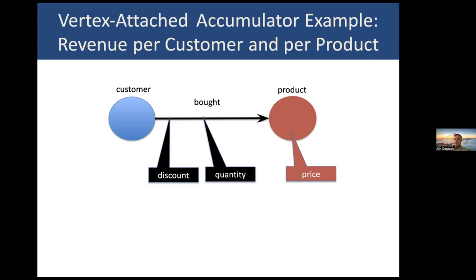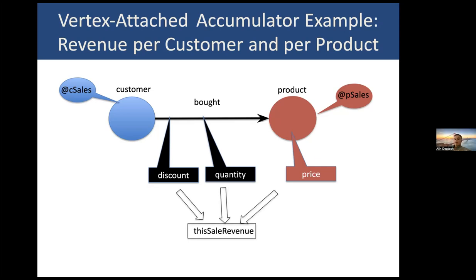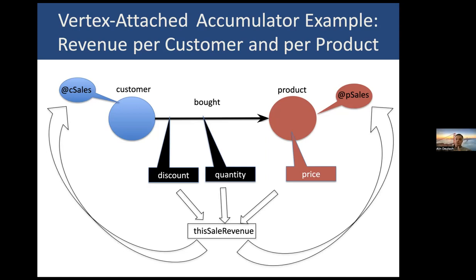So let's look at an example of how this is used. Remember our customer, product, and the relationship between them. I would like to compute the revenue both per customer and per product of all the sales. If I zoom in on a single edge, I will equip the endpoint vertices with accumulators — let's call the one at the customer node the C_sales accumulator and the one at the product node the P_sales accumulator. Then I will compute — note that in an edge map I can access all the attributes of the edge as well as the endpoint vertices — from them I can compute the sale revenue for this particular sale, and write it into both the revenue for the customer and the revenue for the product.